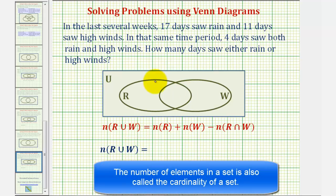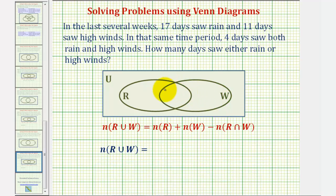So to get us started, set R represents the set of days that saw rain, and set W represents the set of days that saw high winds. And the intersection of these two sets represents the set of days that saw rain and high winds.